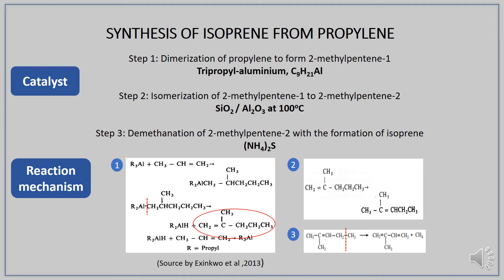Moving on to the reaction mechanism. In Step 1, when propylene reacts with tripropyl aluminium, it produces a product which undergoes cracking to yield dipropyl aluminium hydride and 2-methyl-pentene-1. The 2-methyl-pentene-1 then undergoes isomerization, where the double bond is rearranged to give 2-methyl-pentene-2. In Step 3, demethanation involves cracking to produce isoprene.